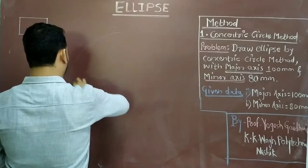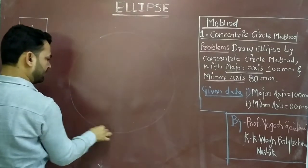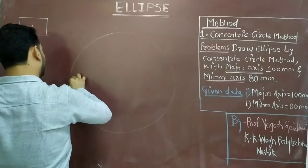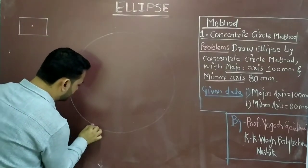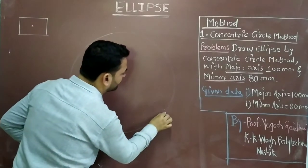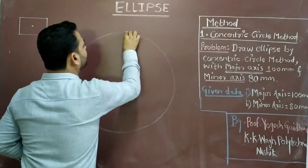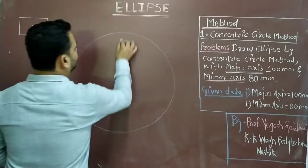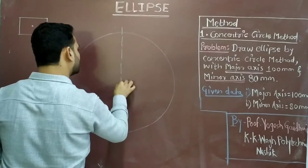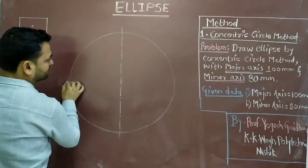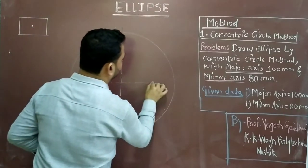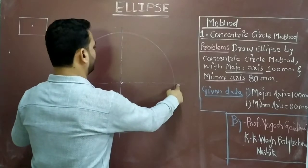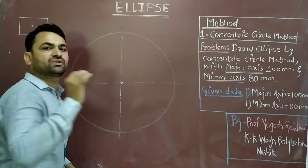Here you have to draw a circle very carefully. This circle will be of diameter 100 mm. We have to use this circle for construction purpose only. Draw the vertical axis as well as horizontal axis of the circle. This is the circle with major axis 100 mm, so this will be equal to 100 mm and this will represent the major axis of the ellipse.